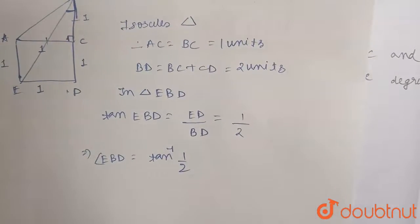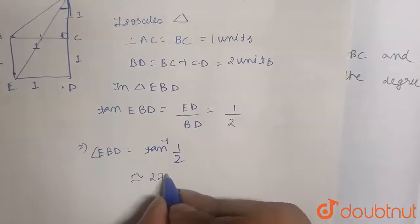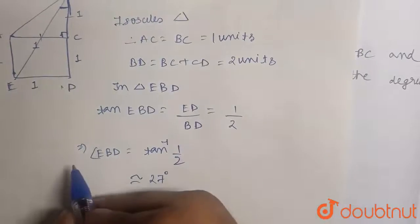You can easily get the value of tan inverse one by two from any trigonometric chart or from your calculator. I already calculated it and the value has come out to be almost 27 degrees. So 27 degrees will be the value of this angle EBD. So option one will be our answer.